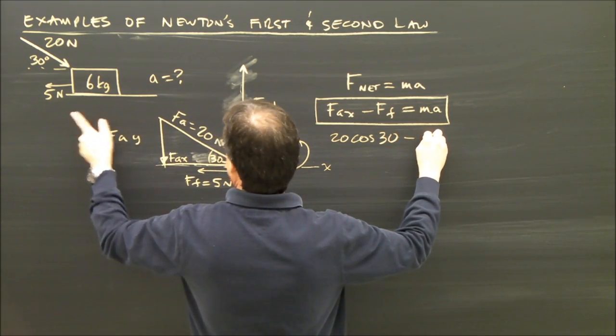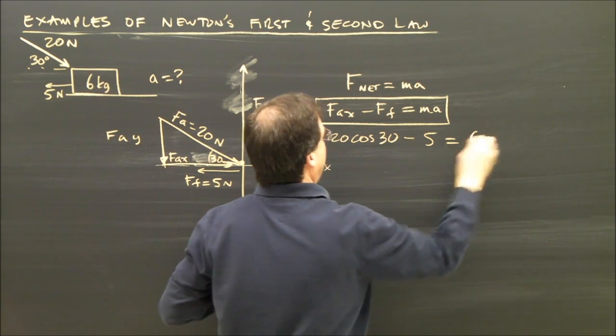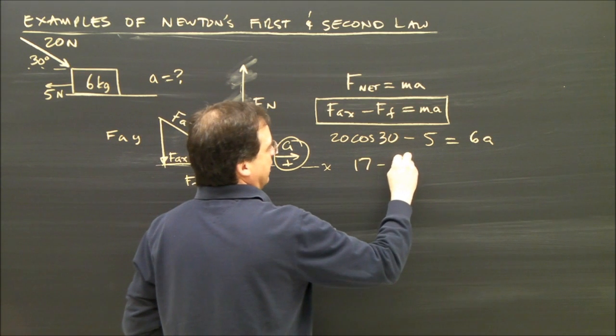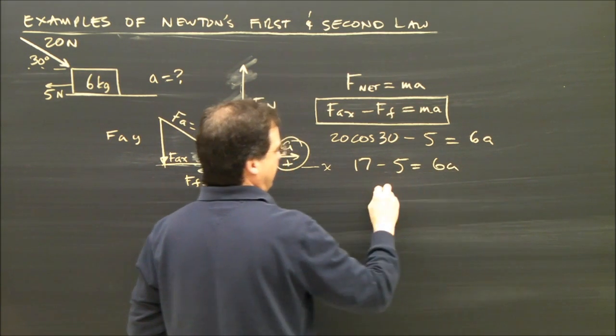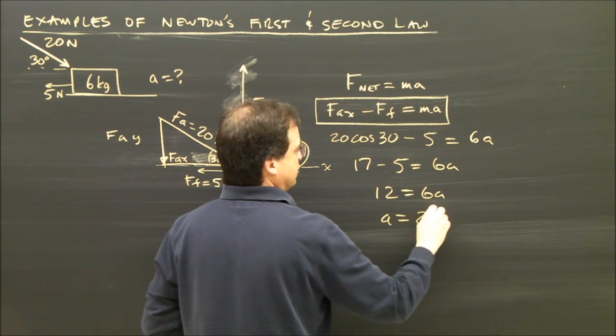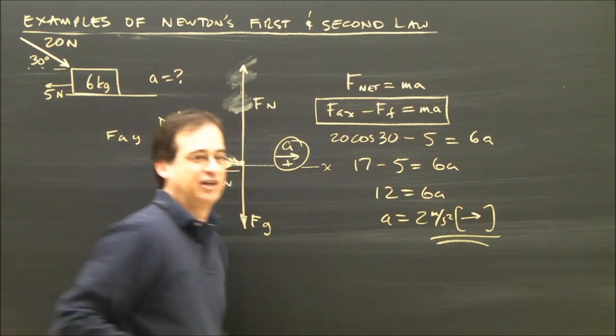Minus the force of friction, which is 5, equals the mass, which is 6a. 20 cosine 30 is 17, actually 17.3. Minus 5 equals 6a, 12 equals 6a, a is equal to 2 meters per second squared to the right. Don't forget your direction.